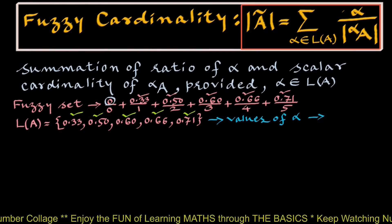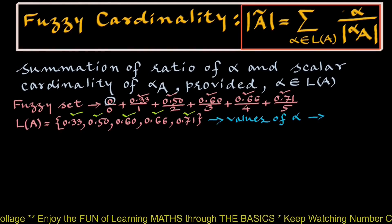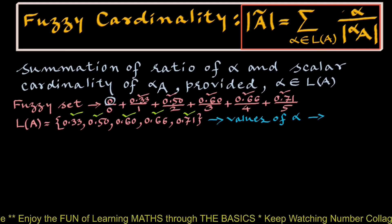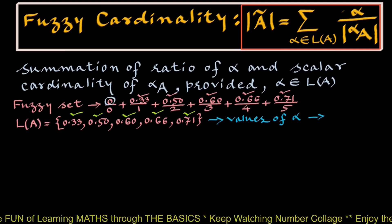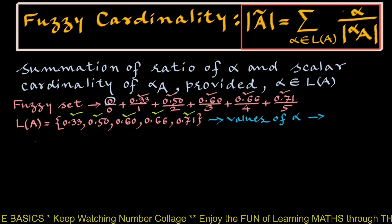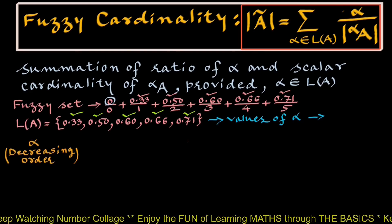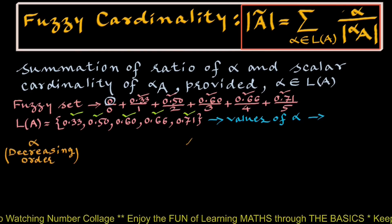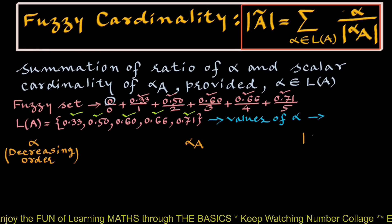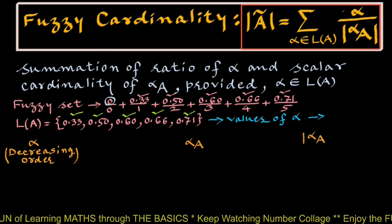Fuzzy cardinality can also be found conveniently by putting the calculations in a tabular form. The first column contains alpha values in decreasing order, then alpha cut A values, and finally the scalar cardinality of alpha cut A.